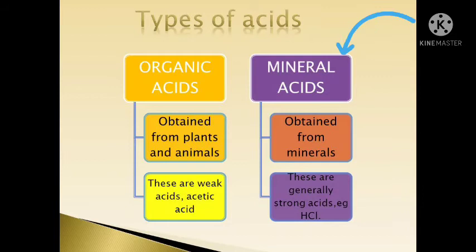Then, mineral acids. Mineral acids are obtained from the minerals. These are also called synthetic acids as they are made in laboratories. These acids contain at least one hydrogen atom but no carbon atom. For example, sulfuric acid, hydrochloric acid, they are very strong acids and should be handled carefully.